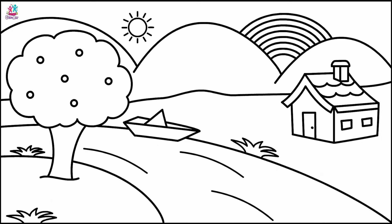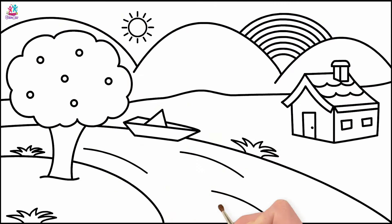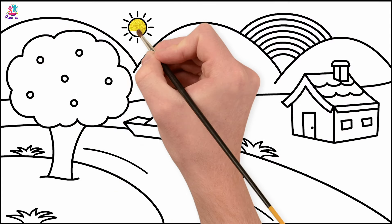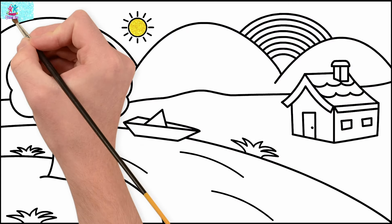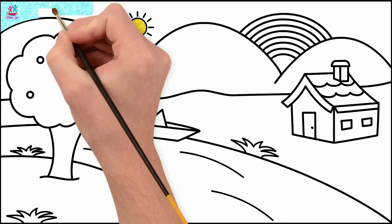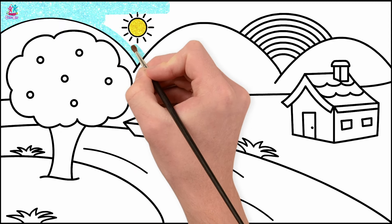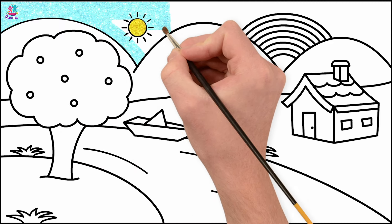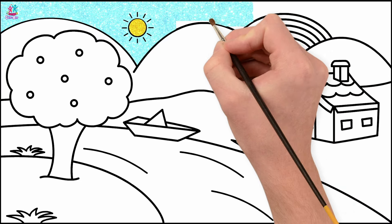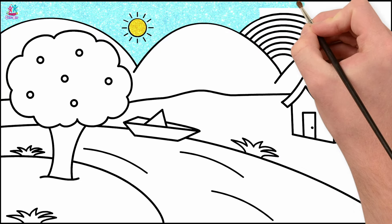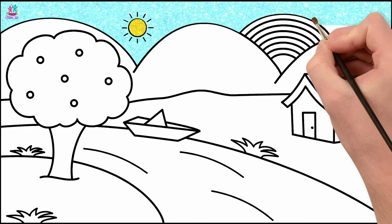And there you have it — we're ready to paint! Yellow sun, a blue sky. You can of course use crayons, colouring pens, pencils or paint, whatever you prefer. It's going to be a beautiful scene.